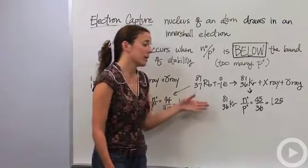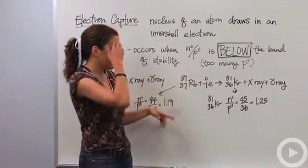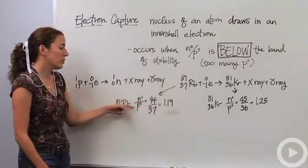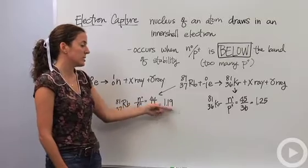Okay, so let's look at this. We have rubidium. It has a mass number of 81 and an atomic number of 37. And if we look at the neutron to proton ratio, it's 44 to 37 which is around 1.19.